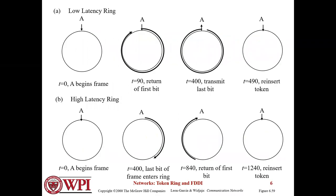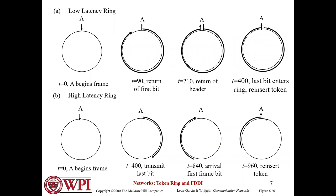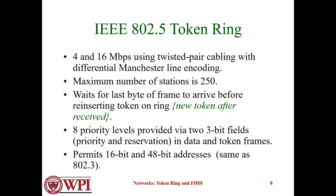IEEE 802.5 Token Ring operates at 4 and 16 Mbps, using twisted pair cabling with differential Manchester line coding. The maximum number of stations is 250, and it waits for the last byte of the frame to arrive before reinserting the token on the ring after the new token is received. There are also eight priority levels provided via two-bit fields for priority and reservation in data and token frames. 16-bit and 48-bit addresses are supported, the same as the Ethernet standard.